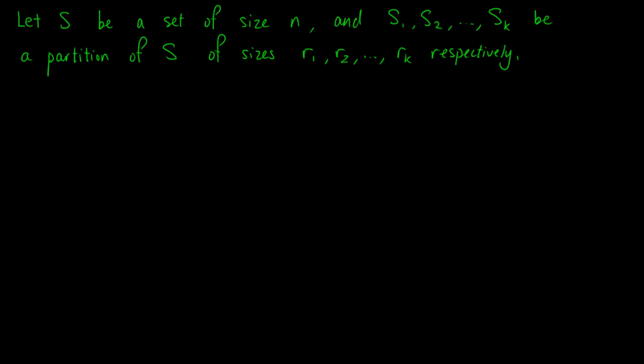Now, let S be a set of size N, and S1, S2, up to Sk be a partition of S of sizes R1, R2, up to Rk respectively. This implies that R1 plus R2 plus up to Rk equals N.